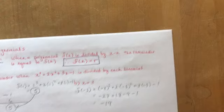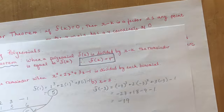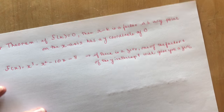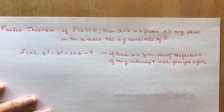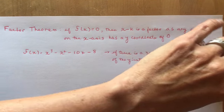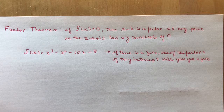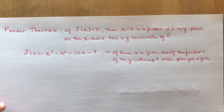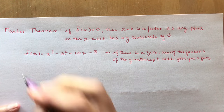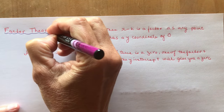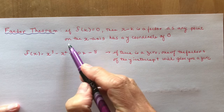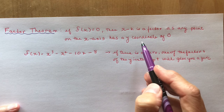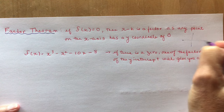Okay, let's move on to the next theorem, which is the factor theorem. The factor theorem says that if f(k) is equal to 0, then x minus k is a factor. As any point on the x-axis has a y-coordinate of 0.